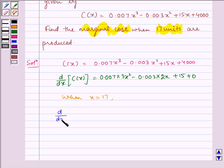d/dx of C(x) equals 0.007 multiplied by 3 times 17² minus 0.003 multiplied by 2 times 17 plus 15.